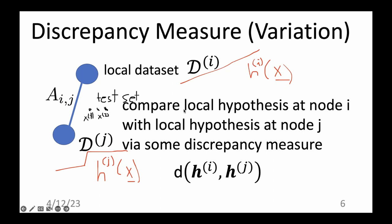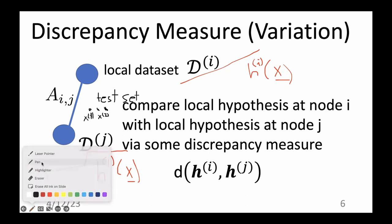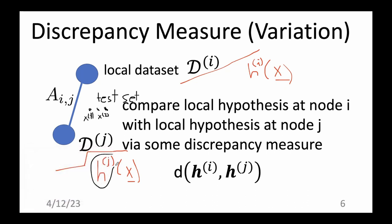That's one option and it's quite flexible, because you can compare predictions of any model that accepts similar types of feature vectors. The hypothesis at node J could be from a decision tree and at node I from a linear model — you can use this test set idea to define a discrepancy measure for heterogeneous local models.